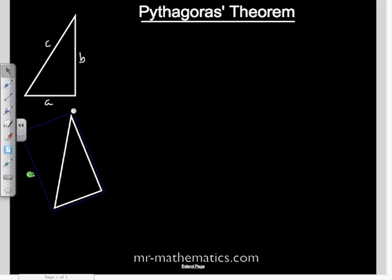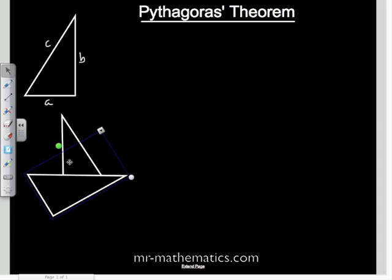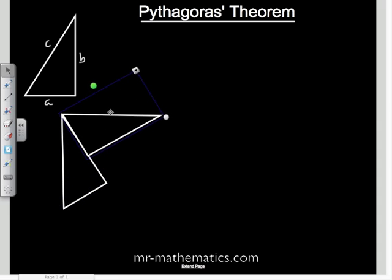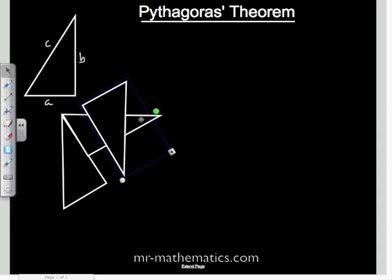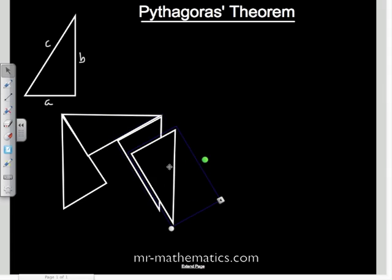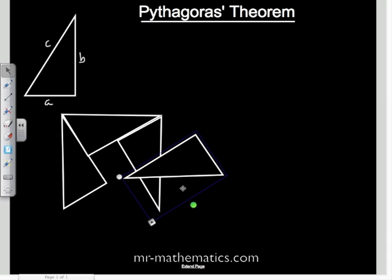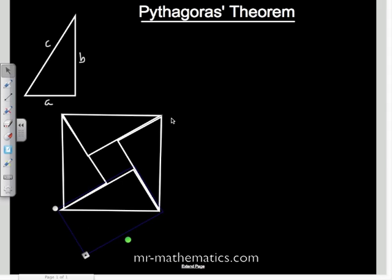I'm going to arrange four congruent right-angled triangles to make, well, almost a perfect square. And if you notice, length C in our original triangle is now on the outside of our square.